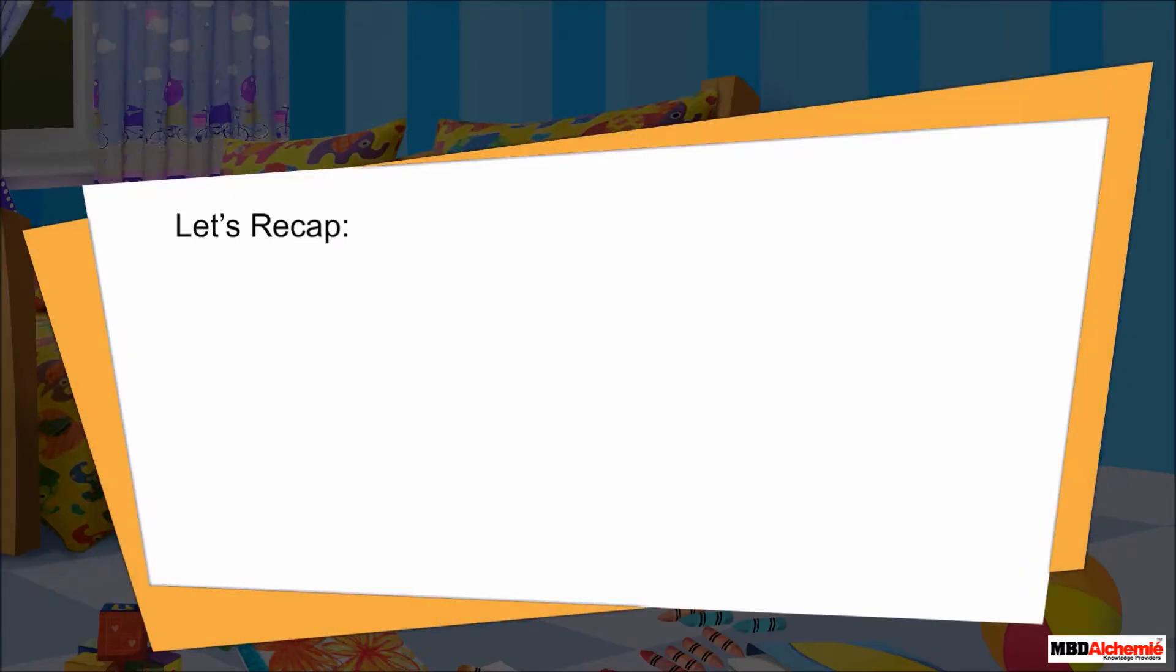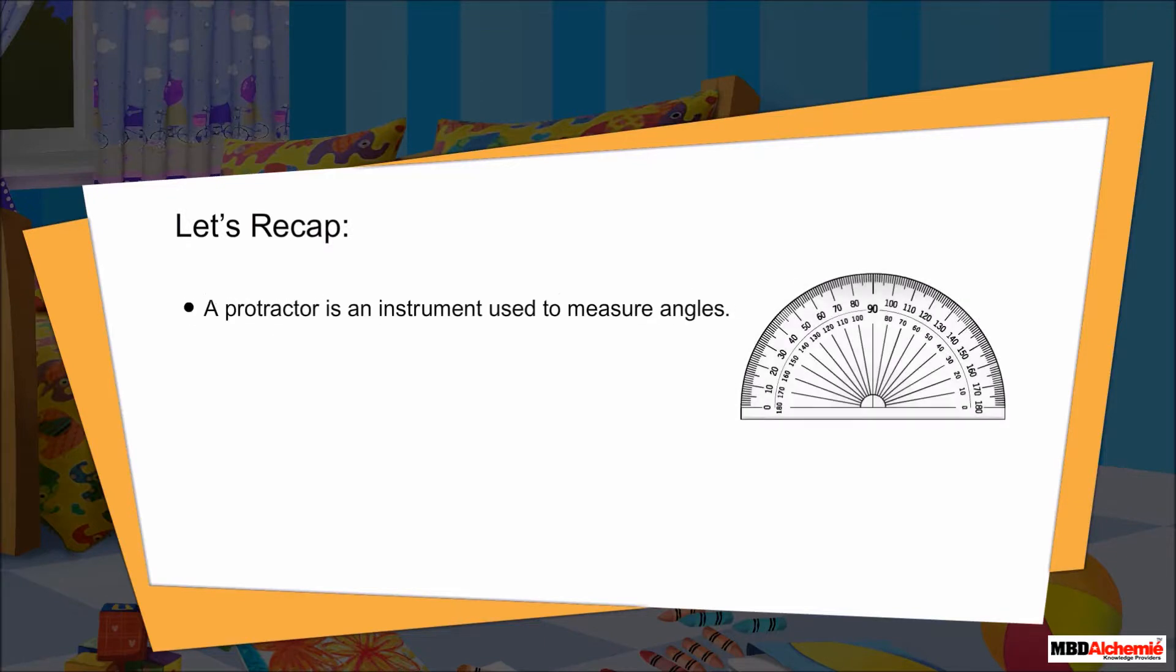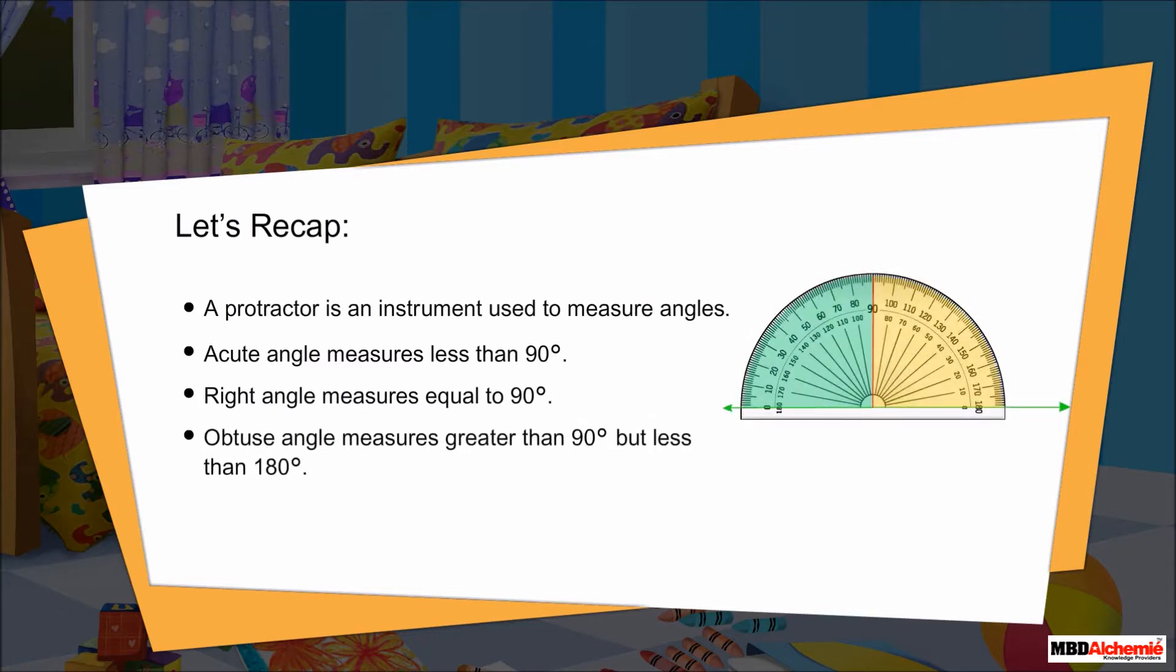Let us recap. A protractor is an instrument used to measure angles. Acute angle measures less than 90 degrees. Right angle measures equal to 90 degrees. Obtuse angle measures greater than 90 degrees but less than 180 degrees.